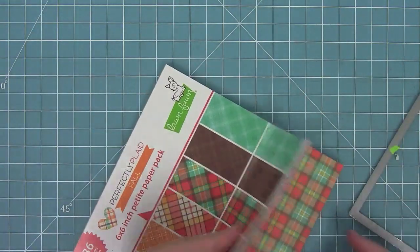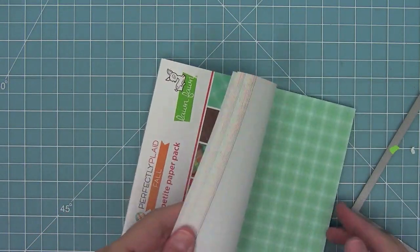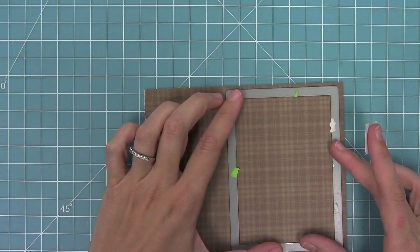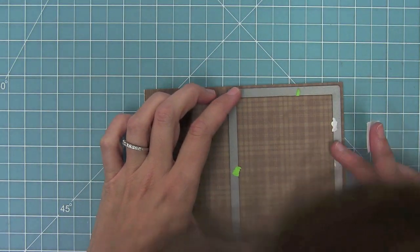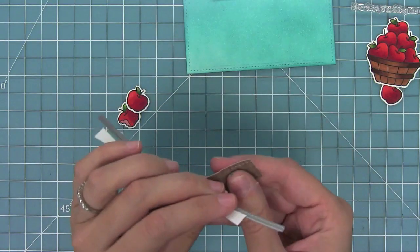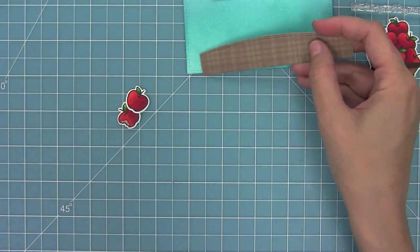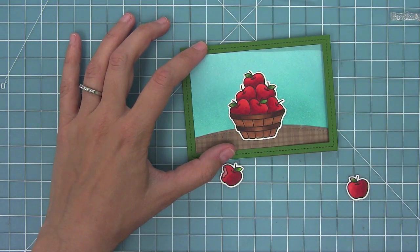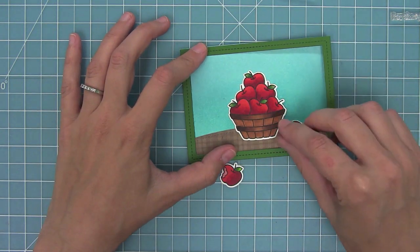Now I wanted to create a base, kind of a hill for the bushel of apples to stand on, and I thought using a brown plaid would be really fun for that. I'm going to use the same size stitched rectangle, cut a rectangle, and then cut a stitched hillside from it so that there's stitching all the way around the piece. Then I cut a stitched rectangle frame from some noble fur cardstock.